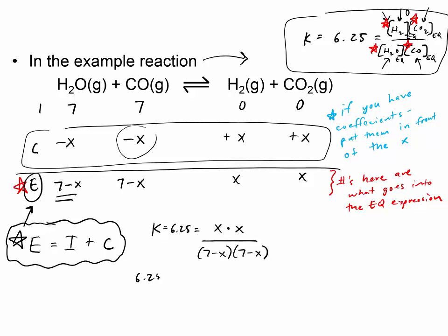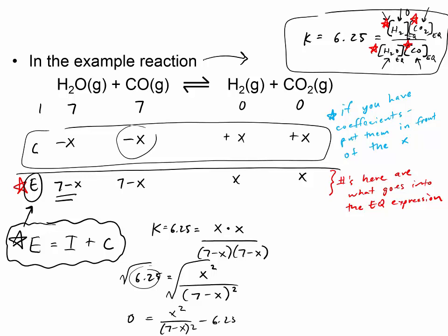It's set up nicely so you could take the square root of both sides. I'm also going to show you a graphing method on the calculator. If you move the 6.25 over by subtracting it from both sides, you get: zero equals x² over (7 − x)² minus 6.25. Let me show you how to do this in the calculator.